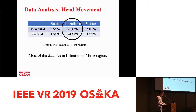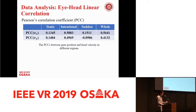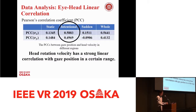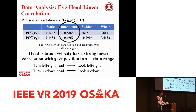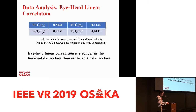To analyze the correlation between eye movements and head movements, we employ Pearson's correlation coefficient, or PCC for short. PCC measures linear correlation. We calculate the PCC between gaze position and head velocity in different regions, and find that head rotation velocity has a strong linear correlation with gaze position in a certain range. This means if you turn your head left or right, you are likely to look left or right; if you turn up or down, you are likely to look up or down. We also calculate PCCs between gaze position and head acceleration, and find that eye-head linear correlation is stronger in the horizontal direction than in the vertical direction. Since the linear correlation in the vertical direction is small, we neglect its influence.